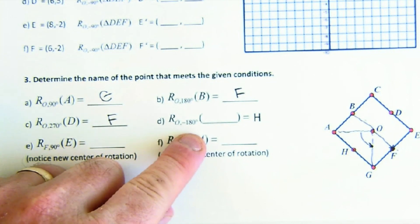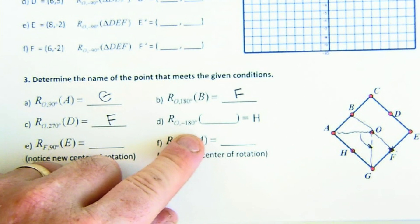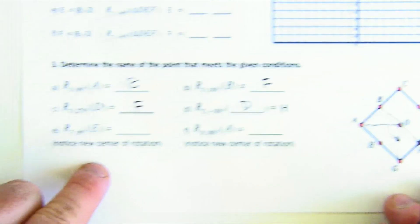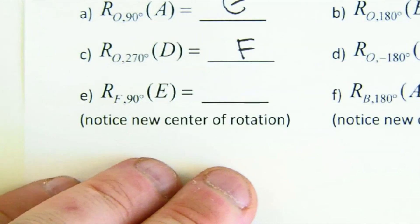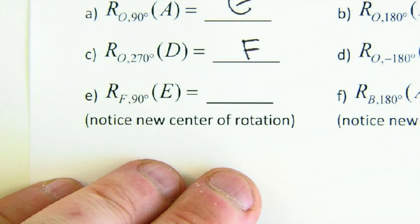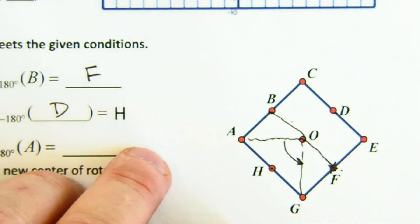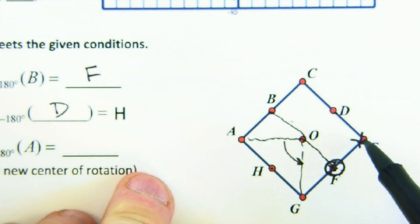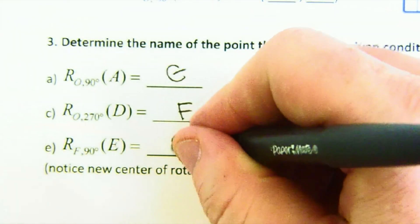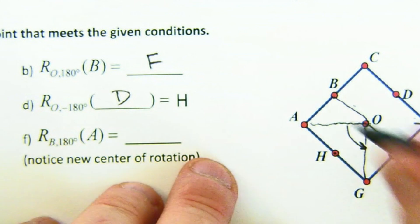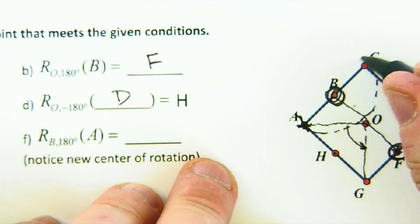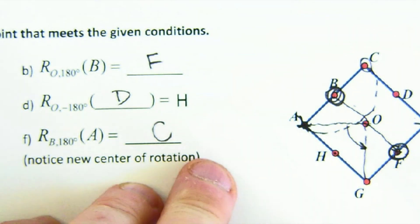Negative 180 is the same as positive 180 — the opposite side of O from H is D. The last two get tricky: the center of rotation changes. Rotate E about F, 90 degrees — here F is our center, and E rotates to the center point O. Rotate point A about B, 180 degrees — it maps all the way over to C. Be careful when the center changes, but the ideas are the same.